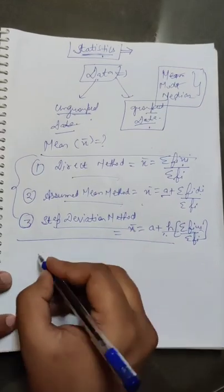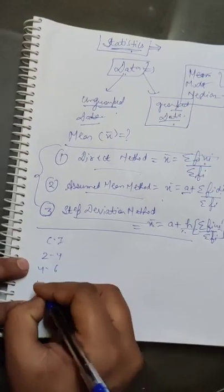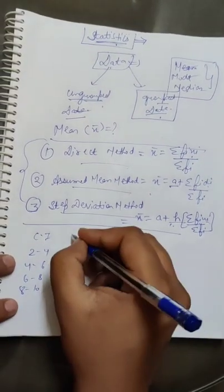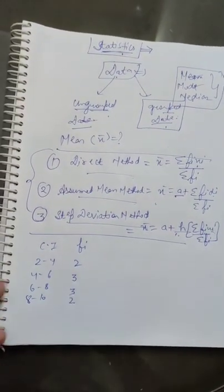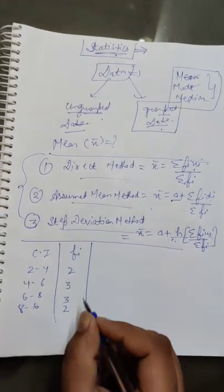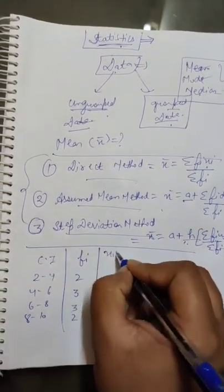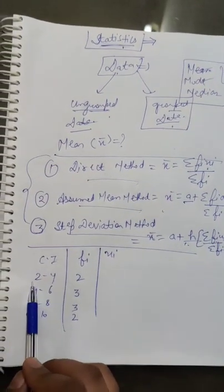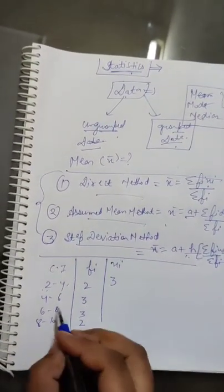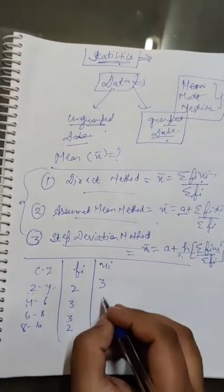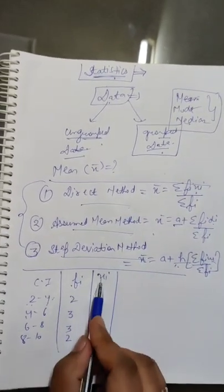For example, we have class intervals given: 2–4, 4–6, 6–8, and 8–10, with frequencies 2, 3, 3, and 2 respectively. The class mark is calculated as (upper limit + lower limit) / 2. So: (4+2)/2 = 3, (6+4)/2 = 5, similarly 7 and 9. Now we have fᵢ and xᵢ set up in the table.